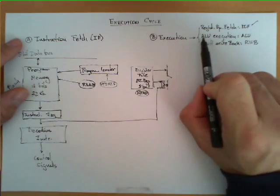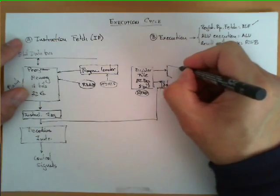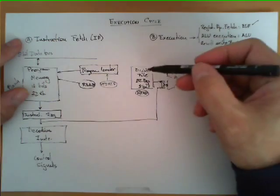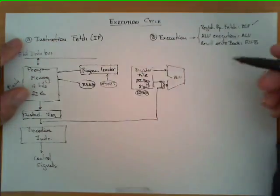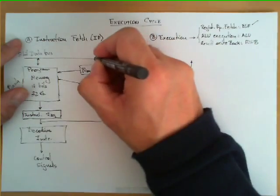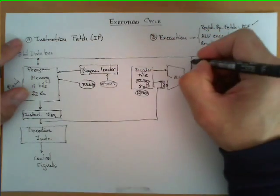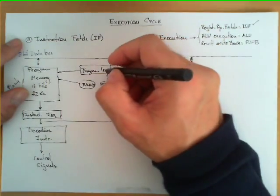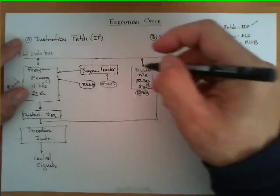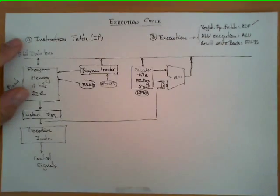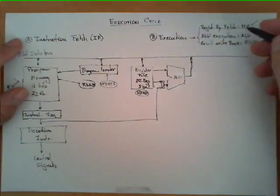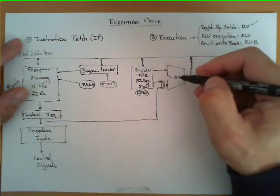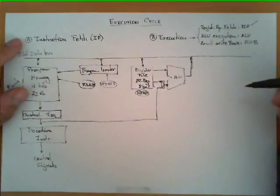The next sub-stage, part of the execution phase, is the ALU execution. The ALU receives these two operands from the register file, or from the register file and the instruction register, and produces a result. Remember, all these blocks are connected to the 8-bit data bus. The ALU performs the operation required for the instruction.